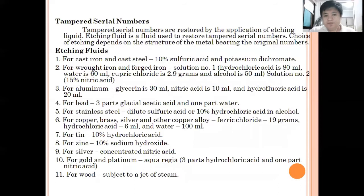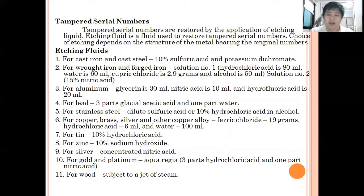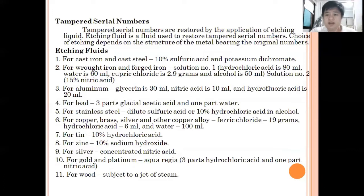The most common application of metallurgy is the restoration of tampered serial numbers. There are many ways to determine if a serial number has been altered or is not the original. Serial numbers are located on the engine number and the chassis number, both in vehicles and motorcycles. These are the most common areas where serial numbers are tampered.